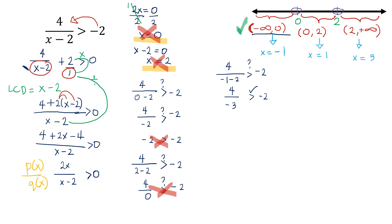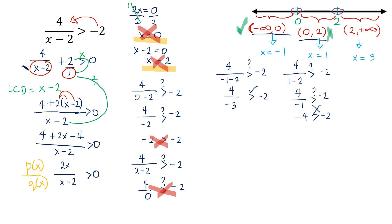For the second interval, 0 to 2, we choose x equals 1. Substituting: 4 over 1 minus 2 equals 4 over negative 1, which equals negative 4. Negative 4 is not greater than negative 2, so the second interval is not a solution to the given inequality.